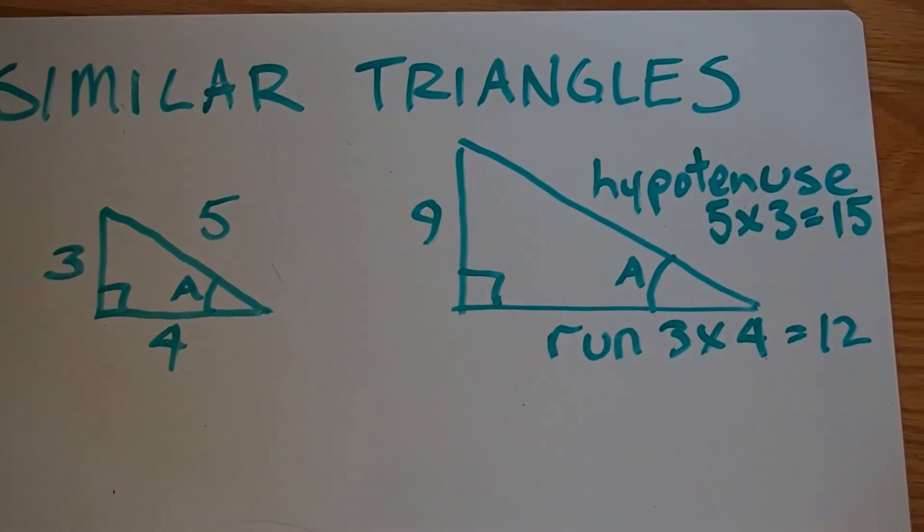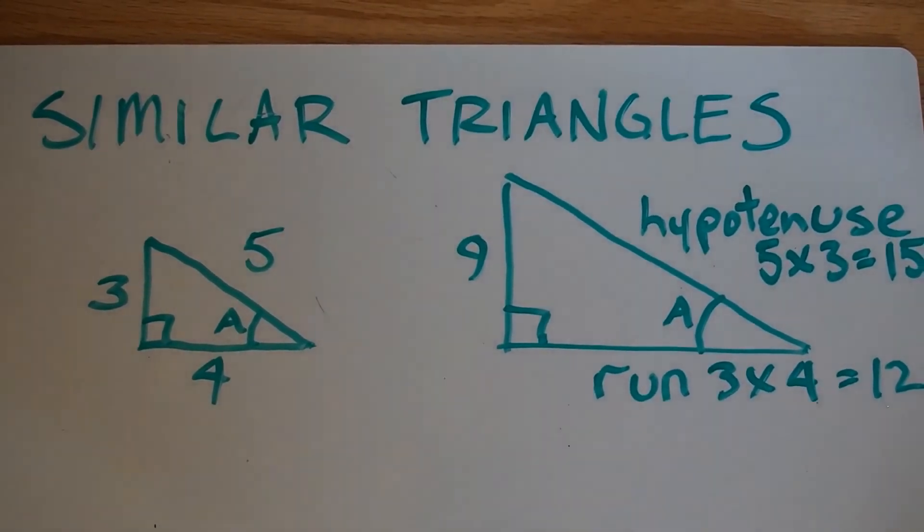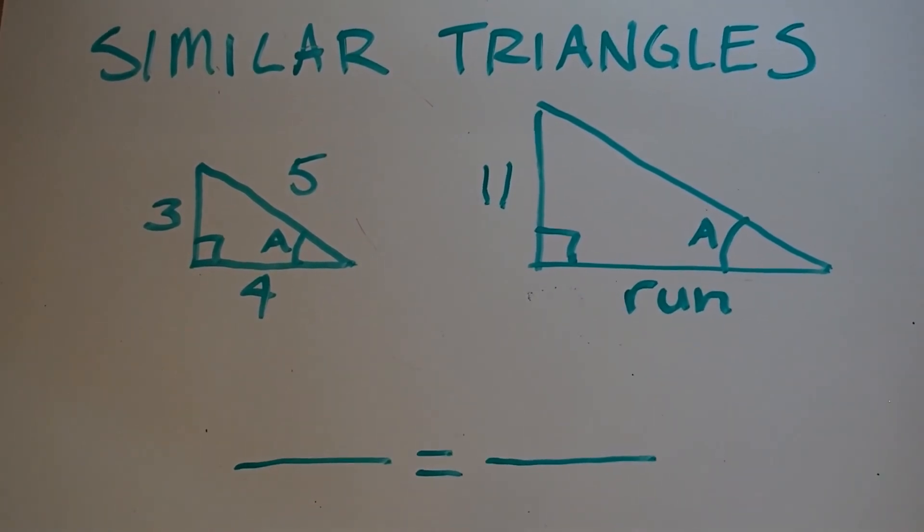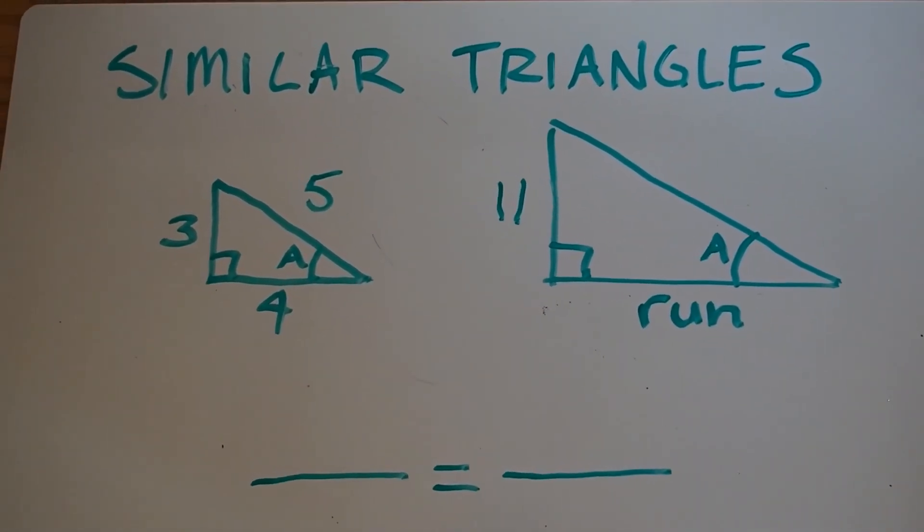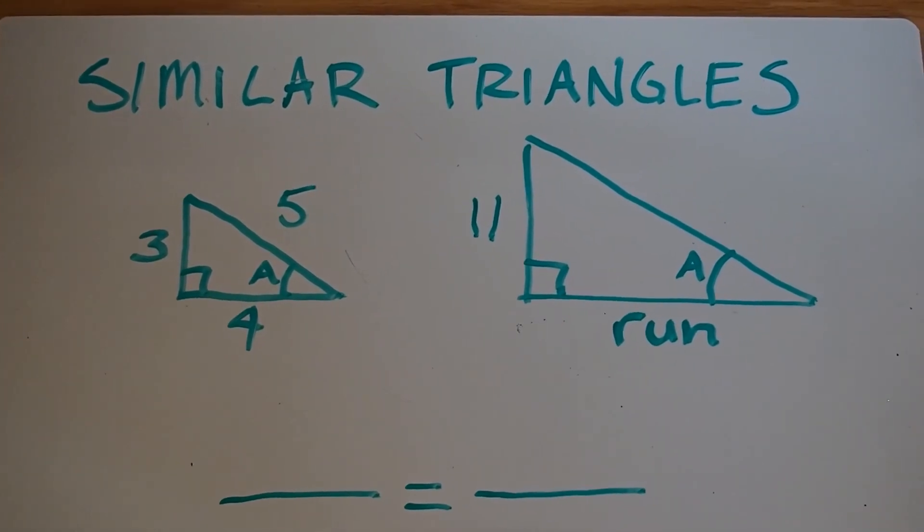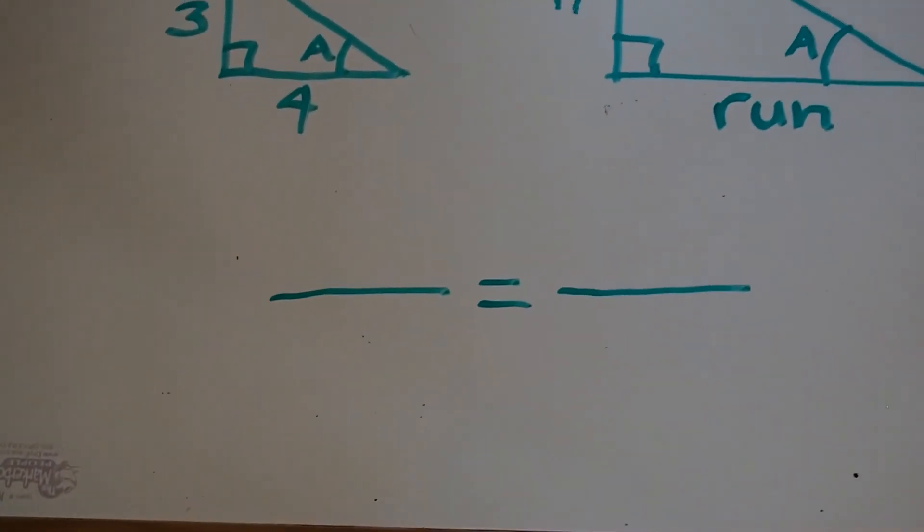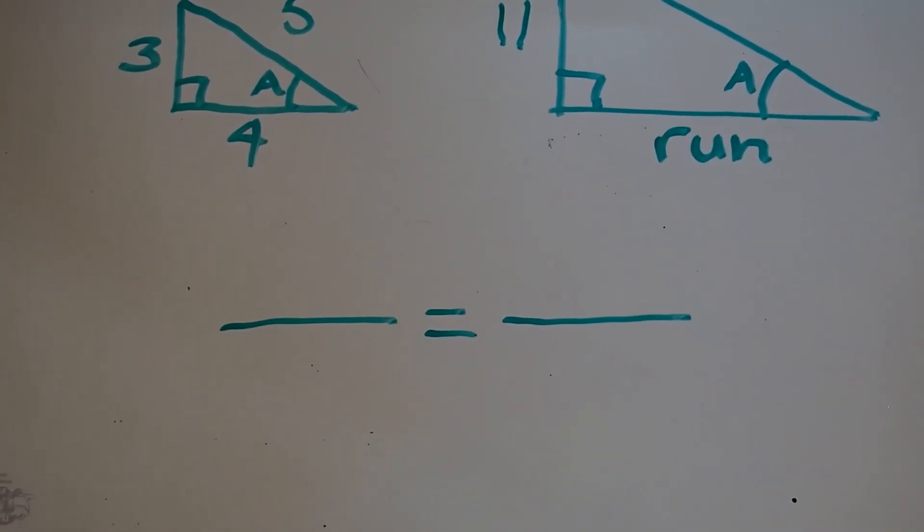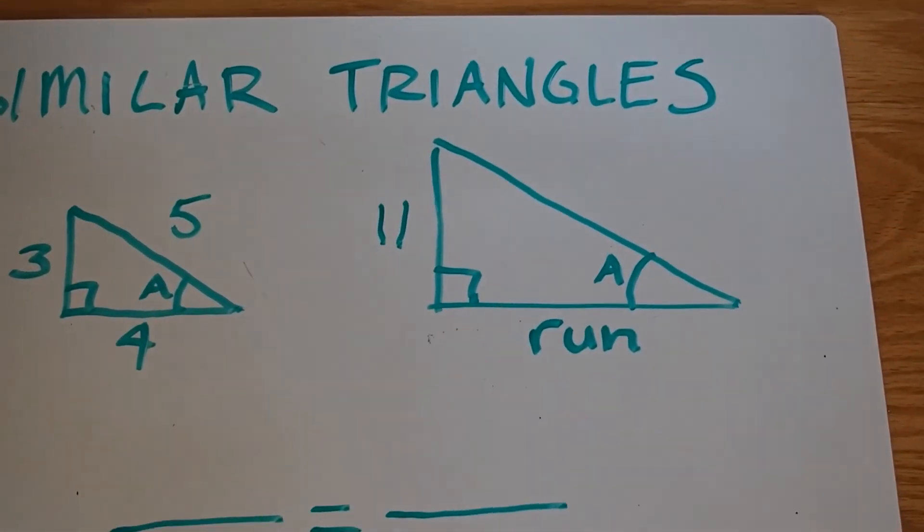Now this is a pretty easy one. What happens if you get numbers that aren't so obvious? So here I have two triangles and the relationship is not so obvious. How many times does three go into eleven? So what we're going to do is we're going to use two fractions, ratio and proportion, and we're going to use a little bit of basic algebra to figure out how long the run is on the bigger triangle.